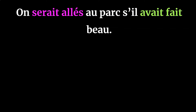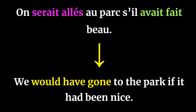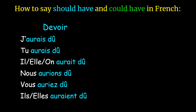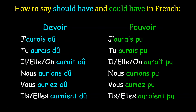The two parts of the sentence can be swapped and still be correct. Remember: when talking about hypothetical past situations, si must be followed by le plus-que-parfait, and the other part will be in le conditionnel passé. To say 'should have,' you use devoir in le conditionnel passé with avoir as the helping verb: j'aurais dû, tu aurais dû, il/elle auraient dû, and elles auraient dû.